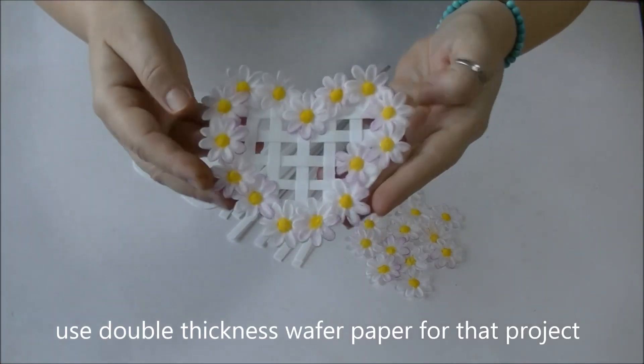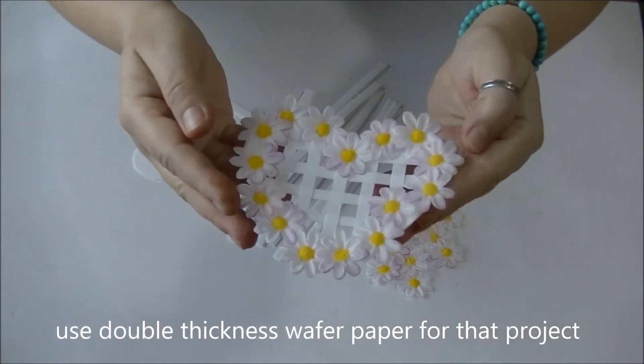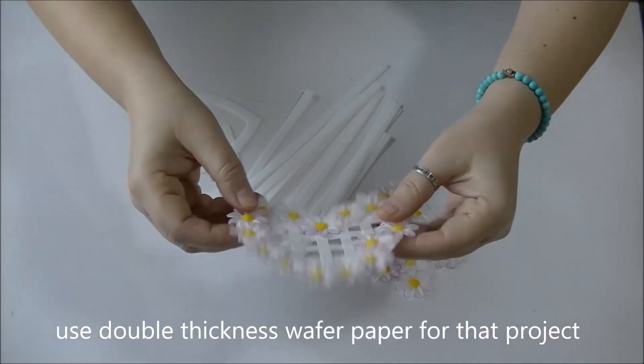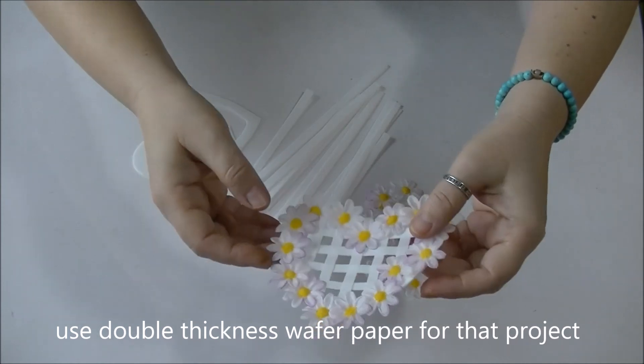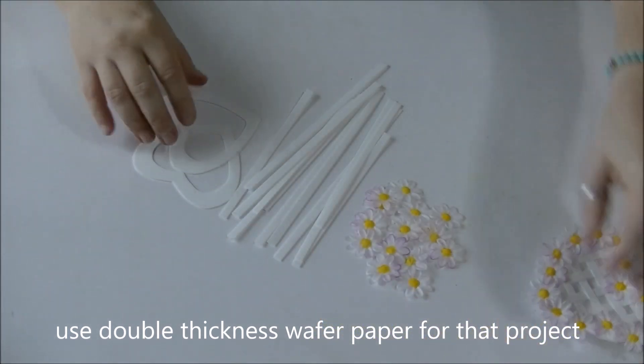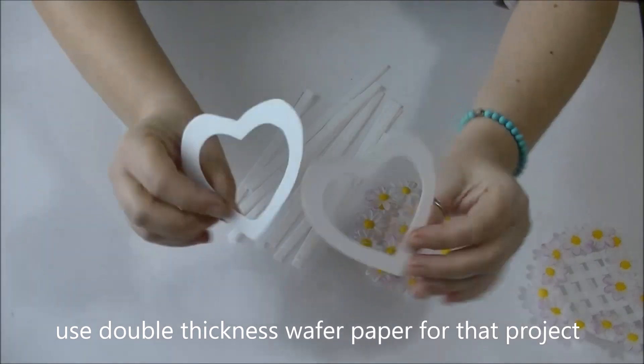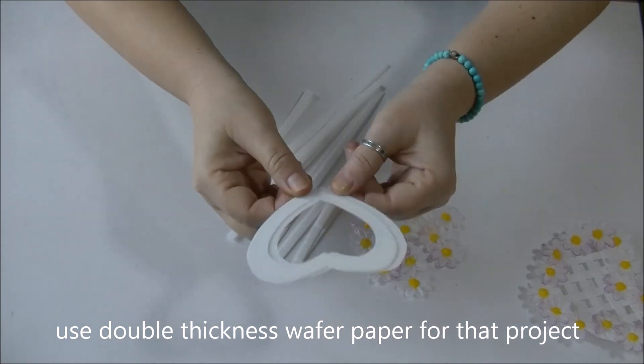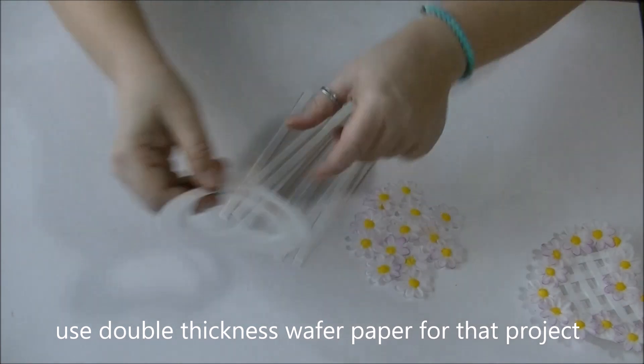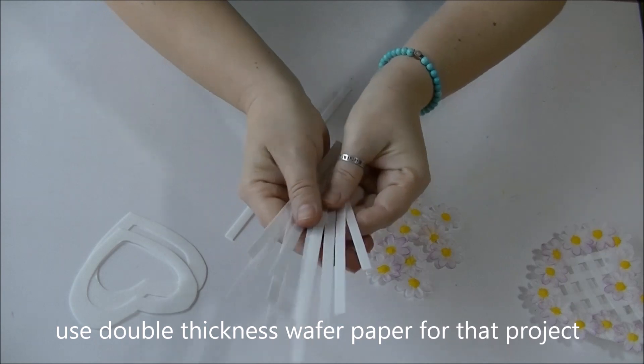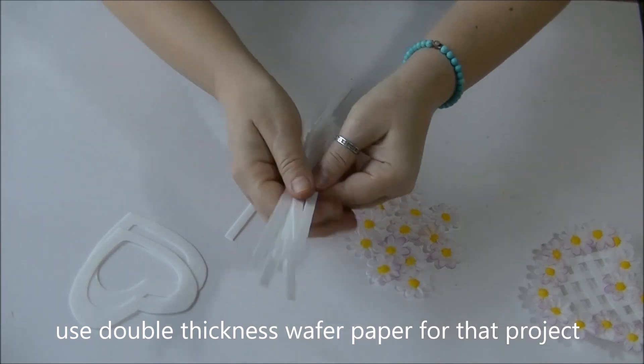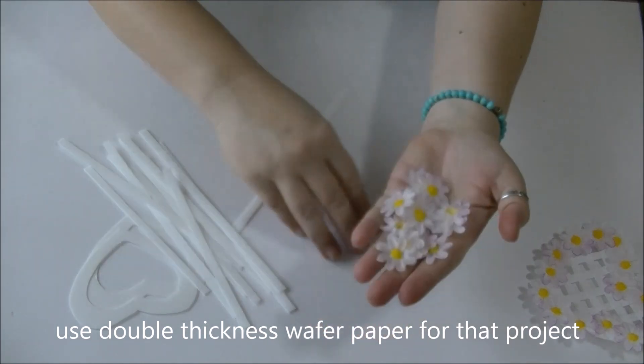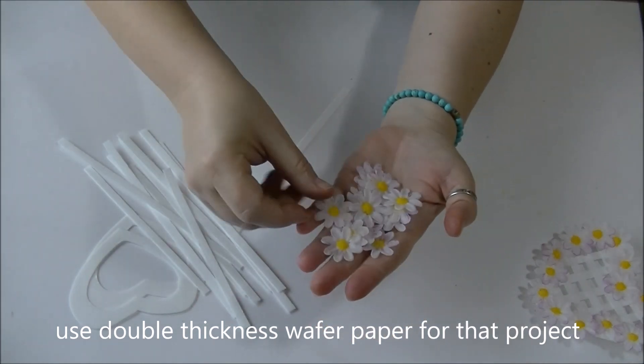For creating that cute wafer paper topper you need only wafer paper, two pre-cut heart shapes, it's up to you the size. Then some strips of wafer paper and wafer paper flowers of your choice.